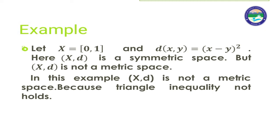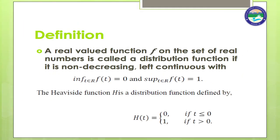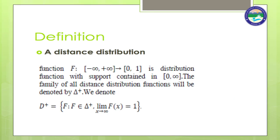Next is the definition of distribution function. A real-valued function F on the set of real numbers is called a distribution function if it is non-decreasing and left-continuous, with inf F(t) = 0 and sup F(t) = 1. The Heaviside function H is defined as H(t) = 0 if t ≤ 0 and H(t) = 1 if t > 0. A distance distribution function maps (−∞, +∞) to [0, 1], with support contained in [0, ∞). The family of all distance distribution functions is denoted Δ⁺. We denote D⁺ = {F ∈ Δ⁺ : lim_{t→∞} F(t) = 1}.